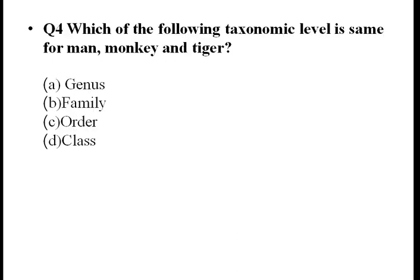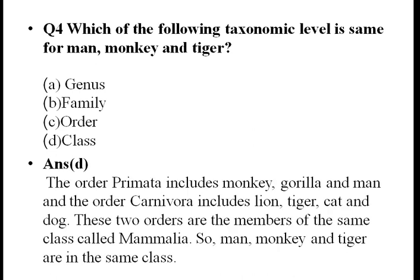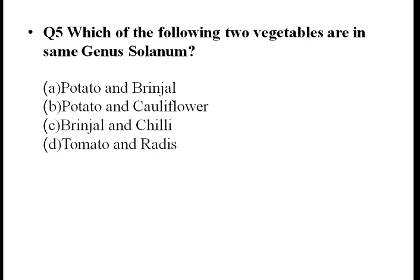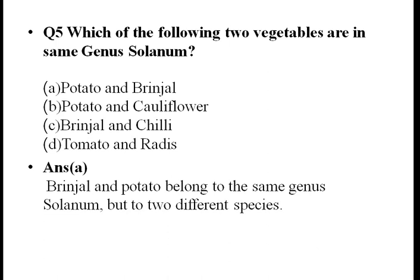Which taxonomic level is the same for man, monkey, and tiger? The levels include genus, family, order, and class. Next question: Which two vegetables belong to the same genus? Solanum is the genus. There are three vegetables in Solanum — potato, tomato, and eggplant (brinjal). The option is potato.